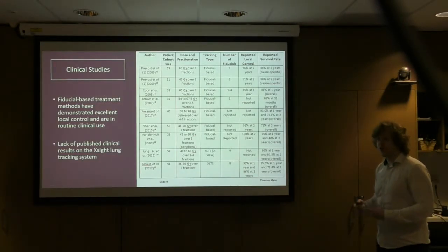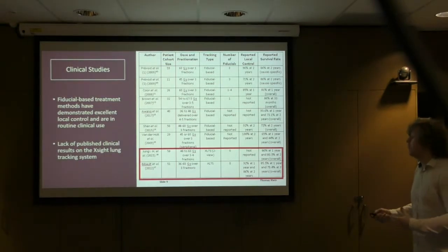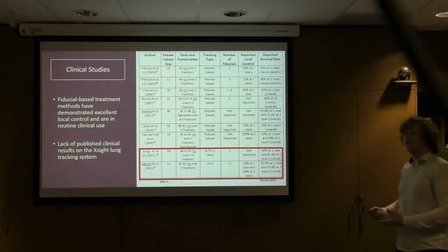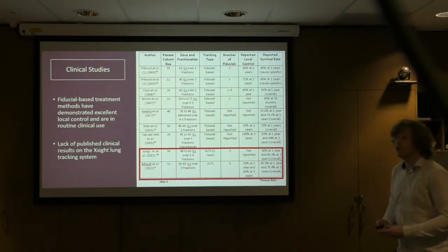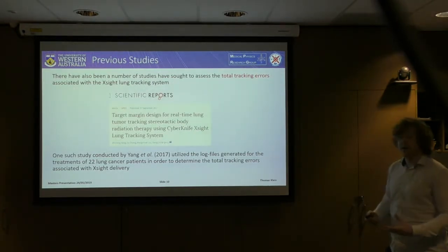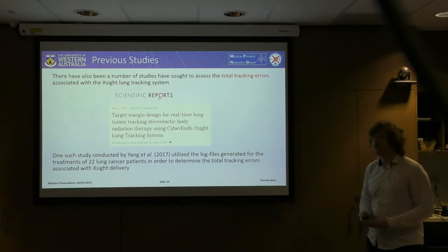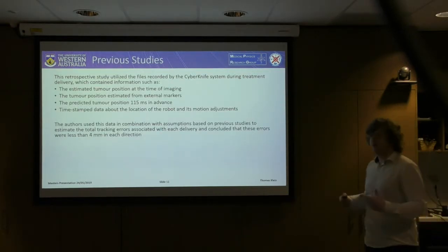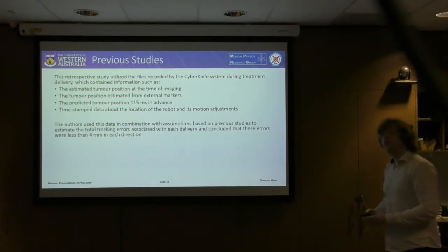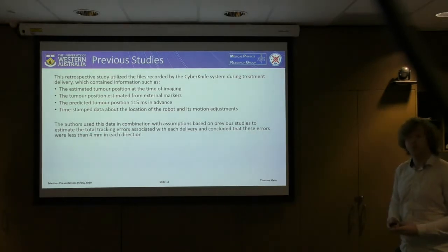There have been many clinical studies on the fiducial-based target tracking system demonstrating high survival rates and local control. However, there is a lack of published results on the Excite system. A study by Yang utilised log files from 22 patients — containing timestamp data, robot movements, and predicted true positions — to calculate that target tracking errors with the Excite system were less than 4mm in every direction. Other studies, such as one by Nakayama, found results consistent with Yang, including no difference in tracking error between two-view and one-view Excite tracking modalities.